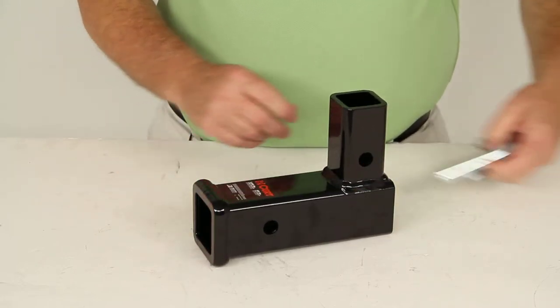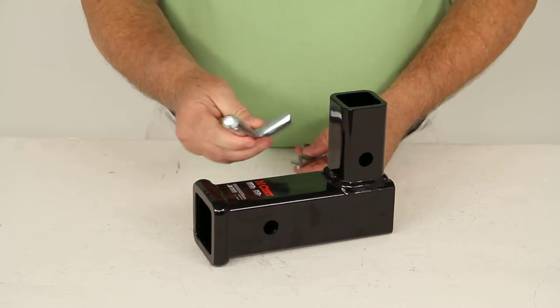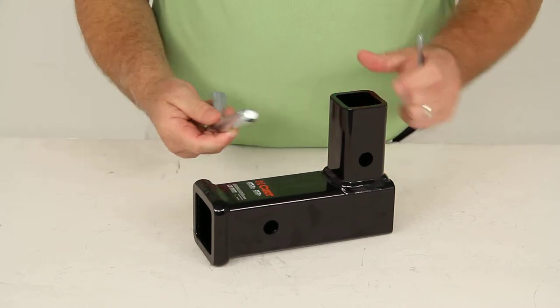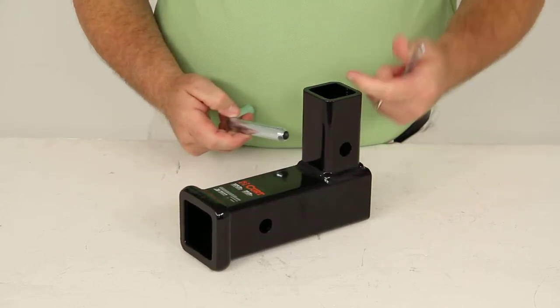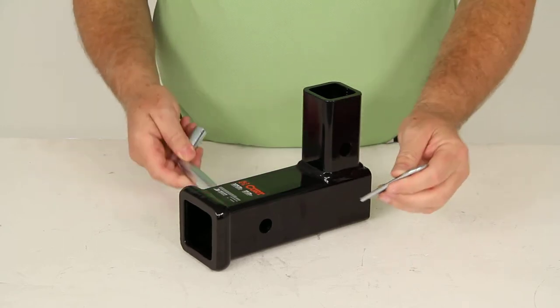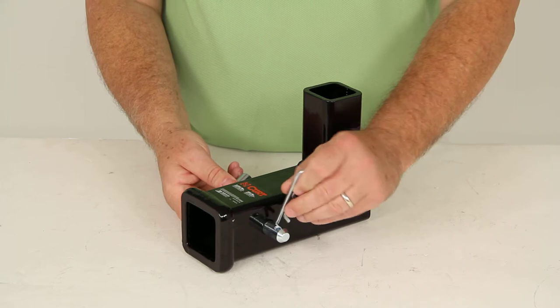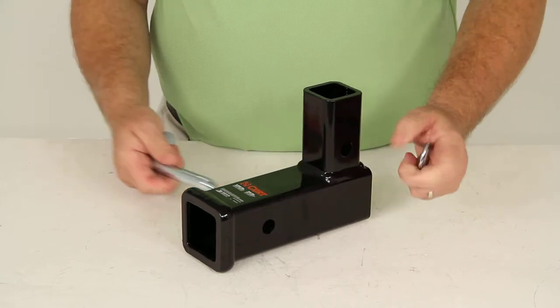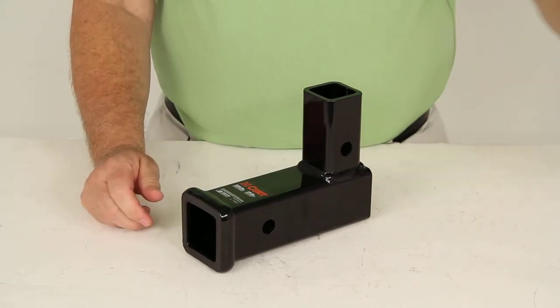It's made to use a five-eighths inch pin and clip. You'd slide this up into the vertical hitch, put the pin and clip in to attach it into place, and then you need to use a pin and clip down here when you put in your accessory or ball mount.